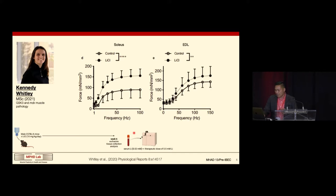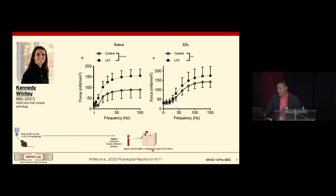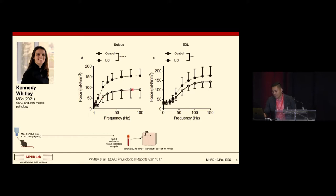Using an ICP mass spec in our chemistry department at Brock University, we found the serum lithium concentration in treated mice was 0.02 millimolar — well below the therapeutic dose of 0.5 millimolar used to treat bipolar disorder. Nonetheless, looking at the force-frequency curve — isometric force normalized to cross-sectional area plotted against stimulation frequency — you can see that force production via force summation increased to a greater extent in the lithium-treated EDL muscles.